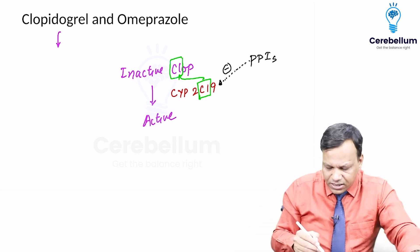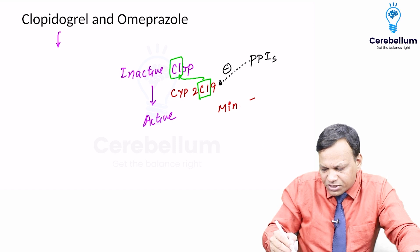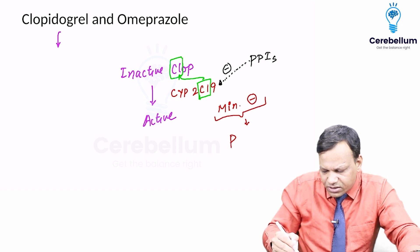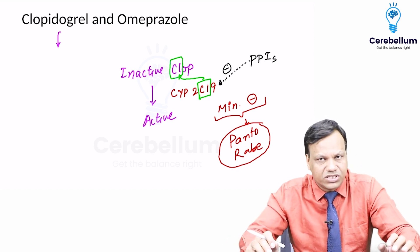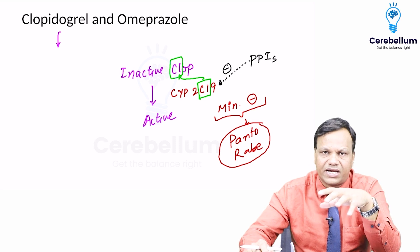And the minimum inhibition of CYP2C19 - minimum inhibition or we can say least drug interaction - is seen with pantoprazole and rabeprazole. All other prazoles have significant inhibition of CYP2C19, but pento and rabeprazole have minimum drug interaction of this type.